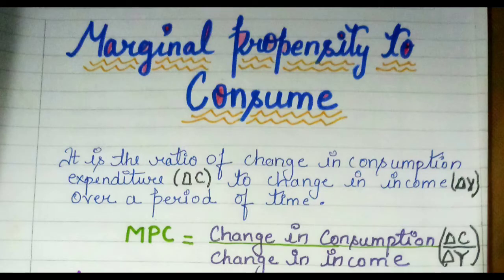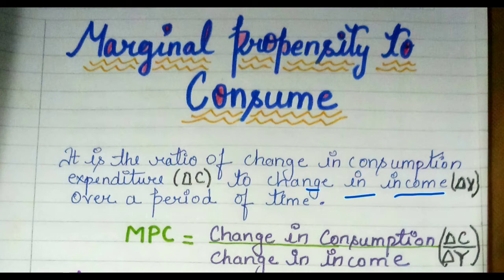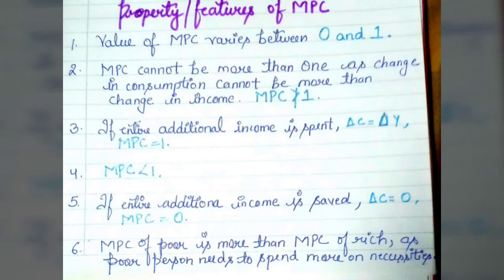MPC is the ratio of change in consumption expenditure to change in income over a period of time. The difference between APC and MPC is that MPC only talks about how much consumption has changed with respect to change in income. The formula is ΔC upon ΔY.